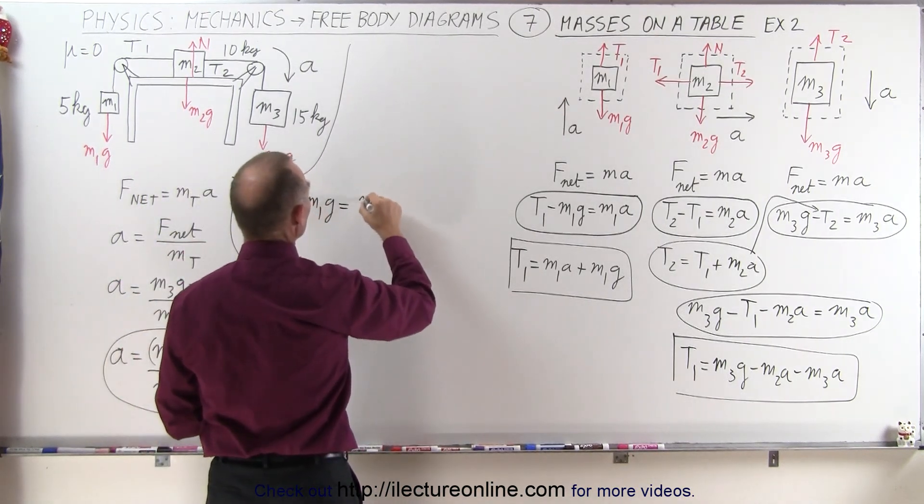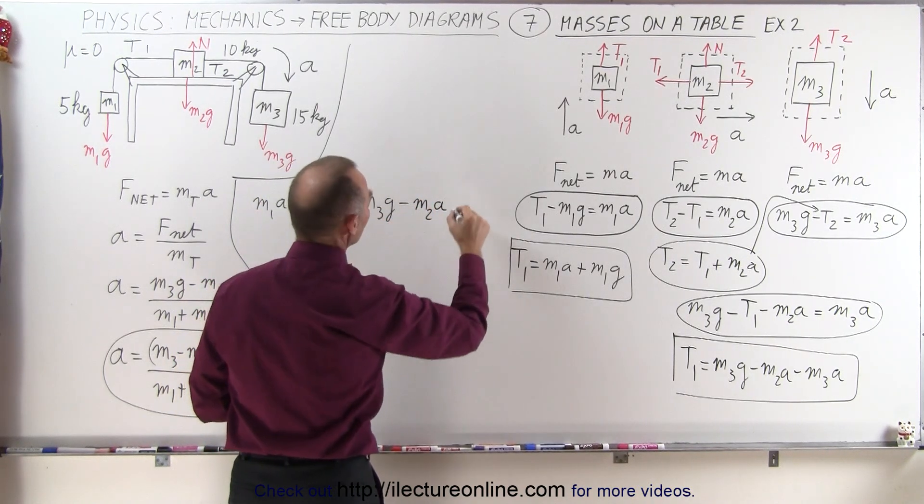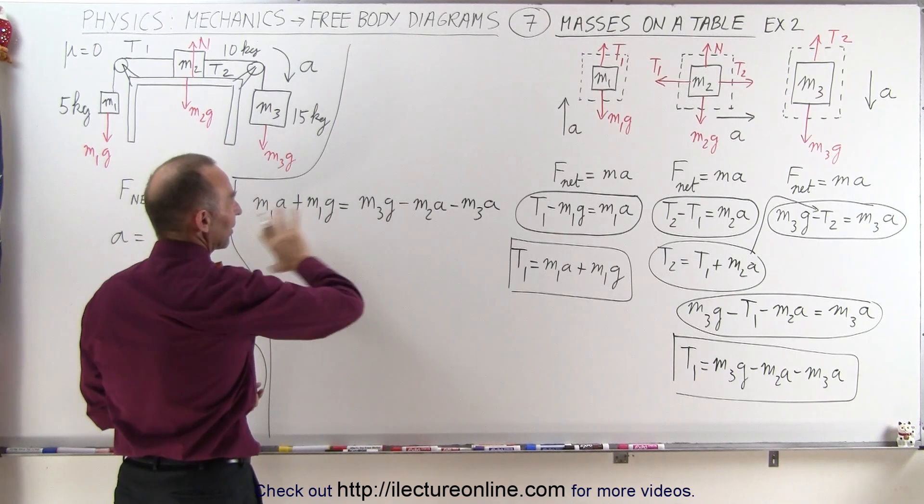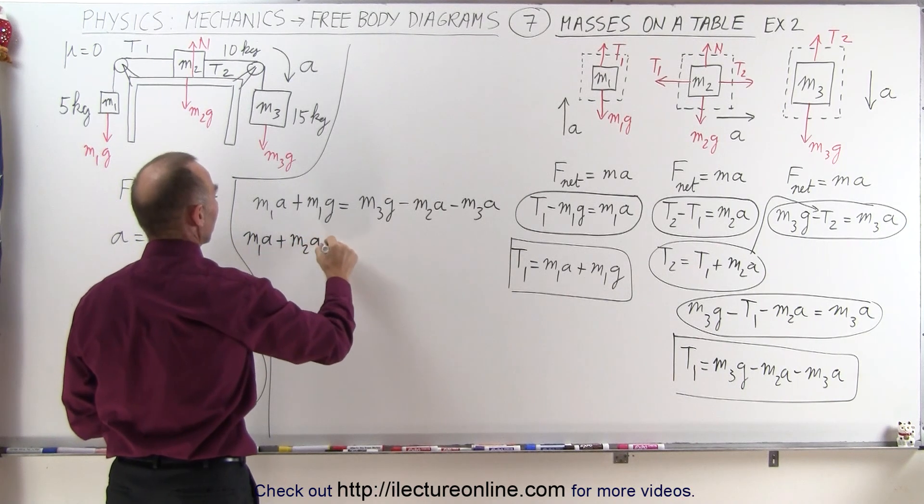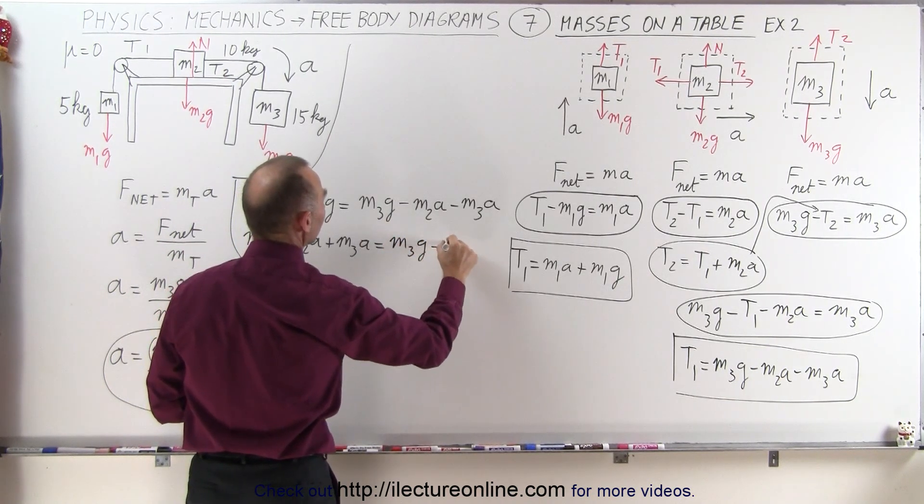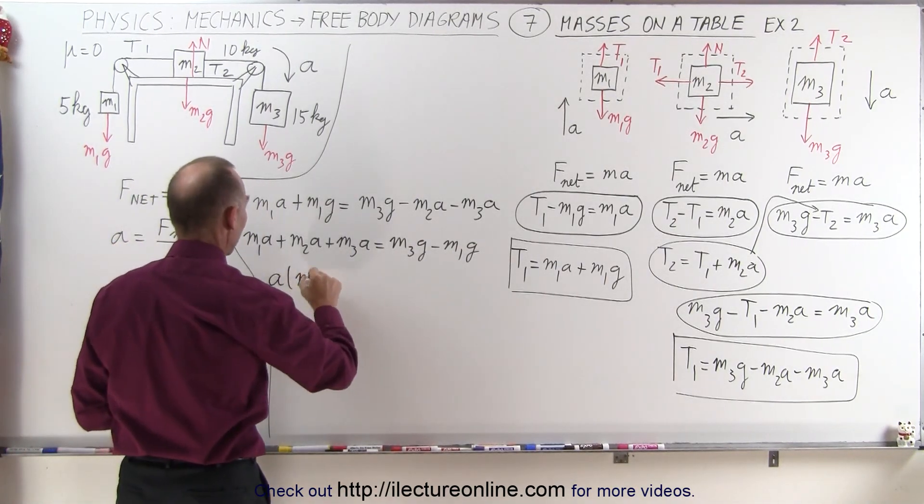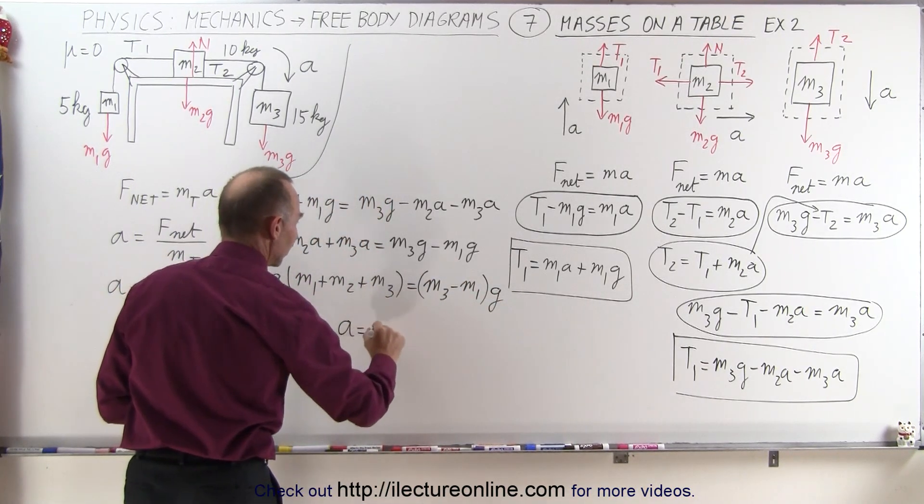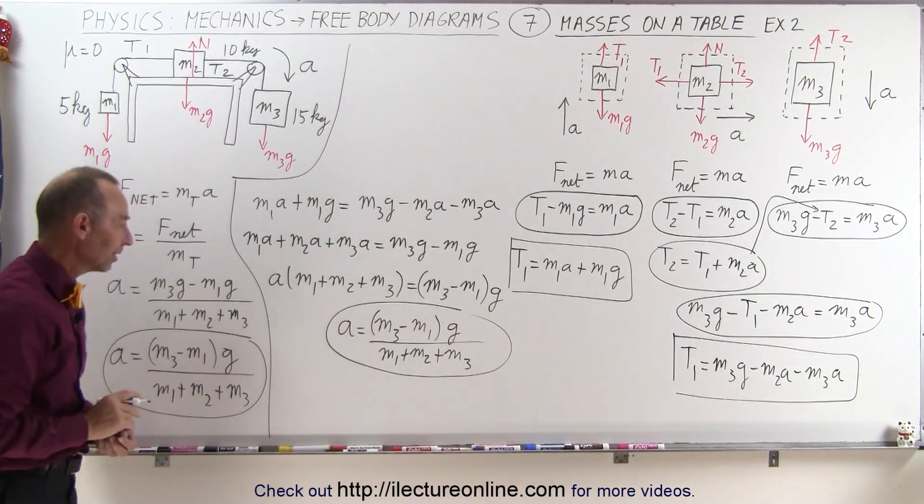Okay, let's go ahead and move all the terms that have an a in it to one side, everything else to the other side. So on the left side we end up with m1a plus m2a plus m3a, and on the right side we end up with the exact same equation that we have over here.